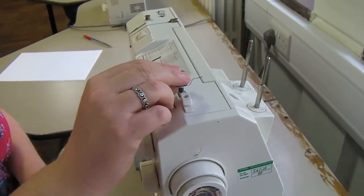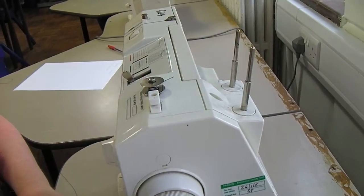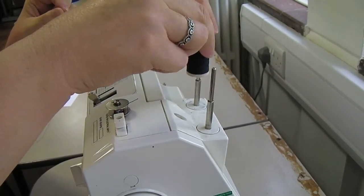Winding thread on a bobbin. Place the bobbin on the spike at the top of the machine. Take your thread and place it on the thread holder.